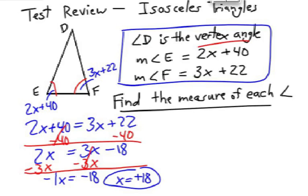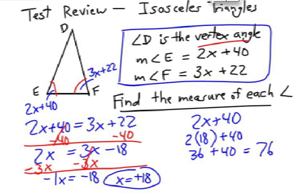Alright, now we need to plug that in there and try to figure out what the actual value of the angles are. So 2x plus 40 is really 2 times 18 plus 40, 36 plus 40 equals 76 degrees. So one base angle has to be 76 degrees. The other base angle has to be 76 degrees.